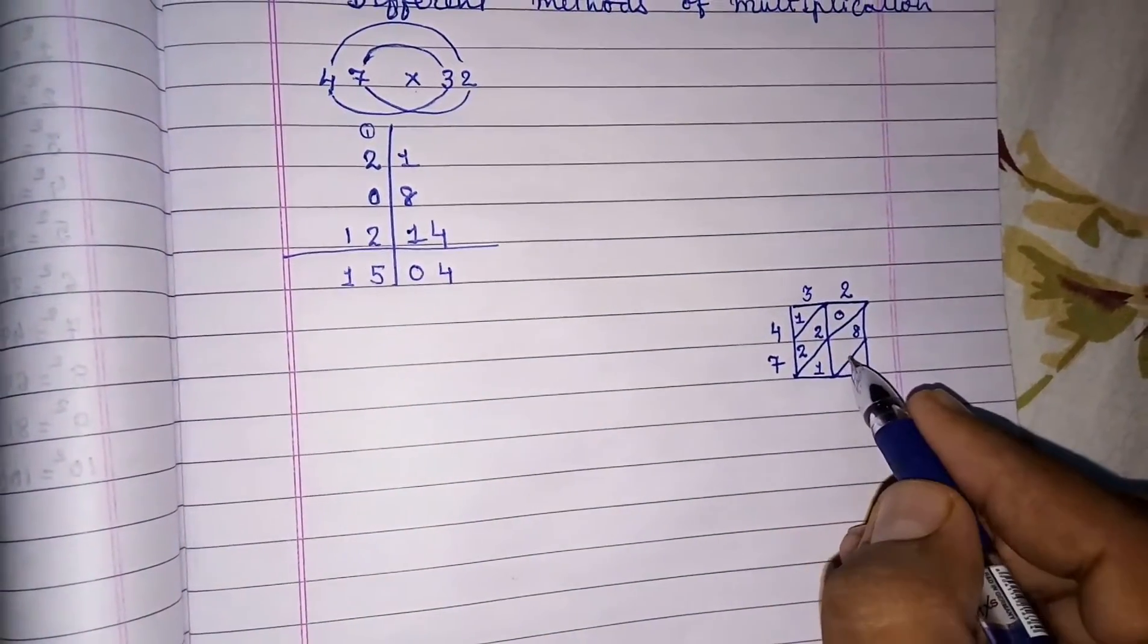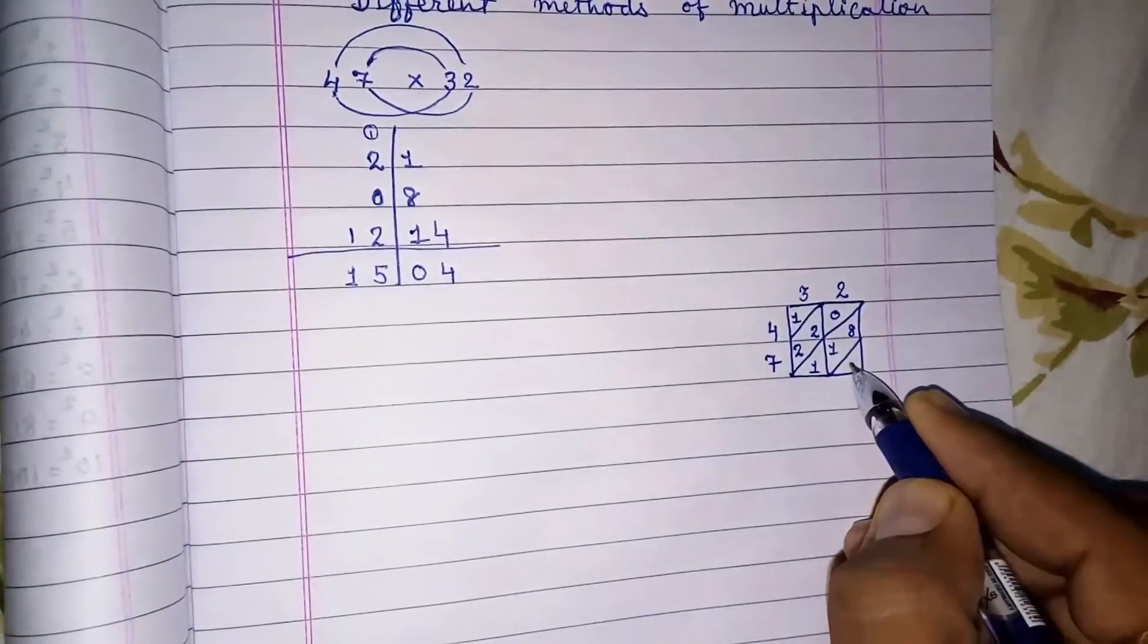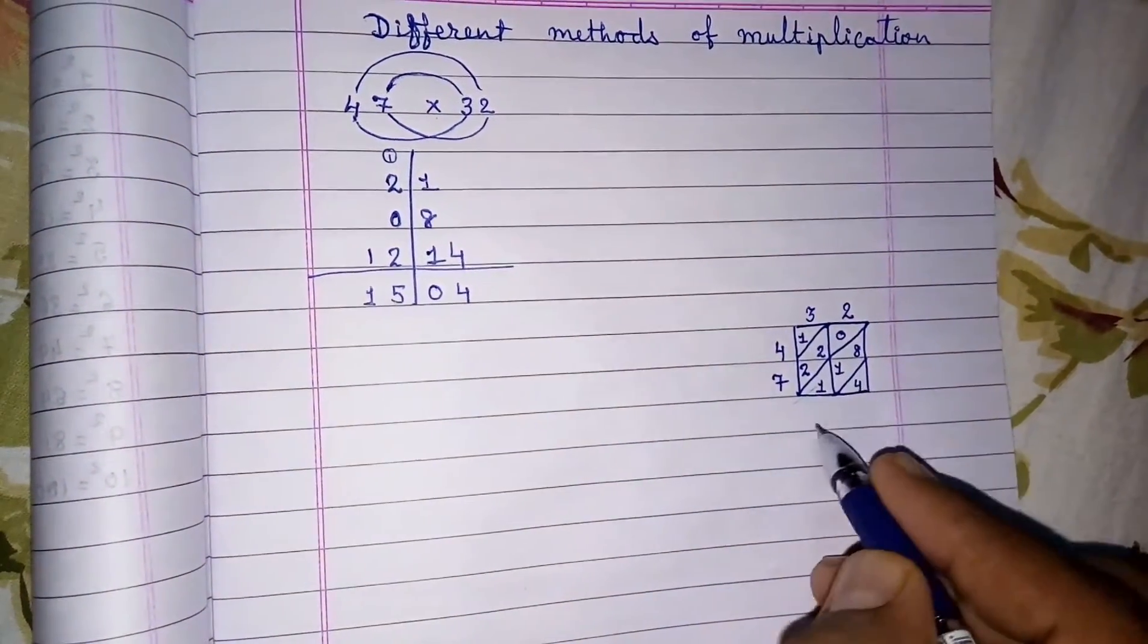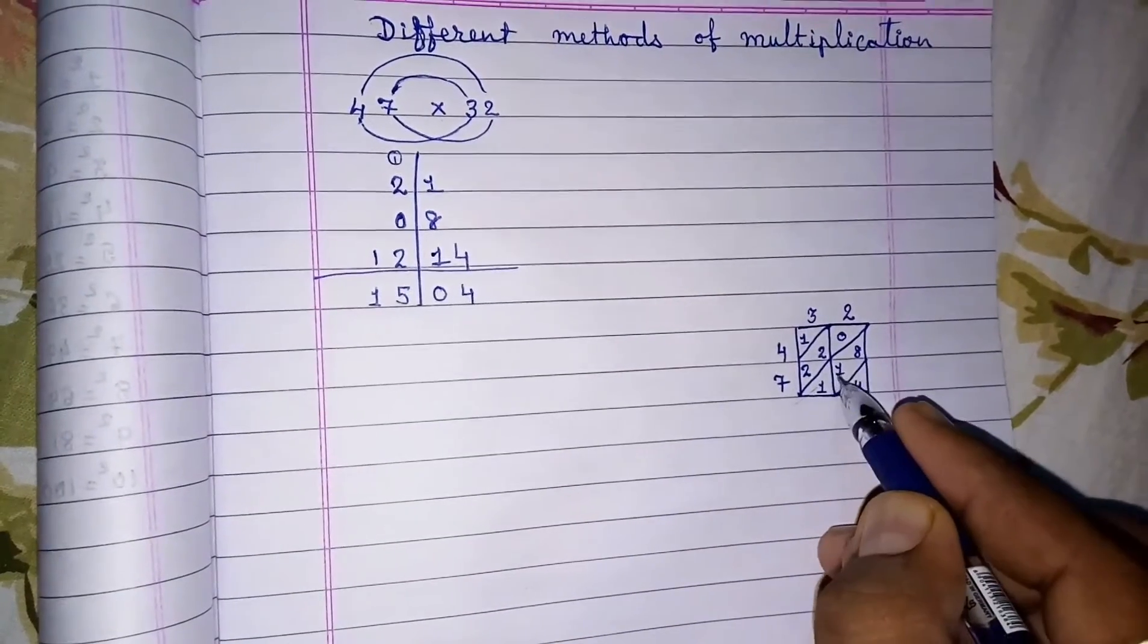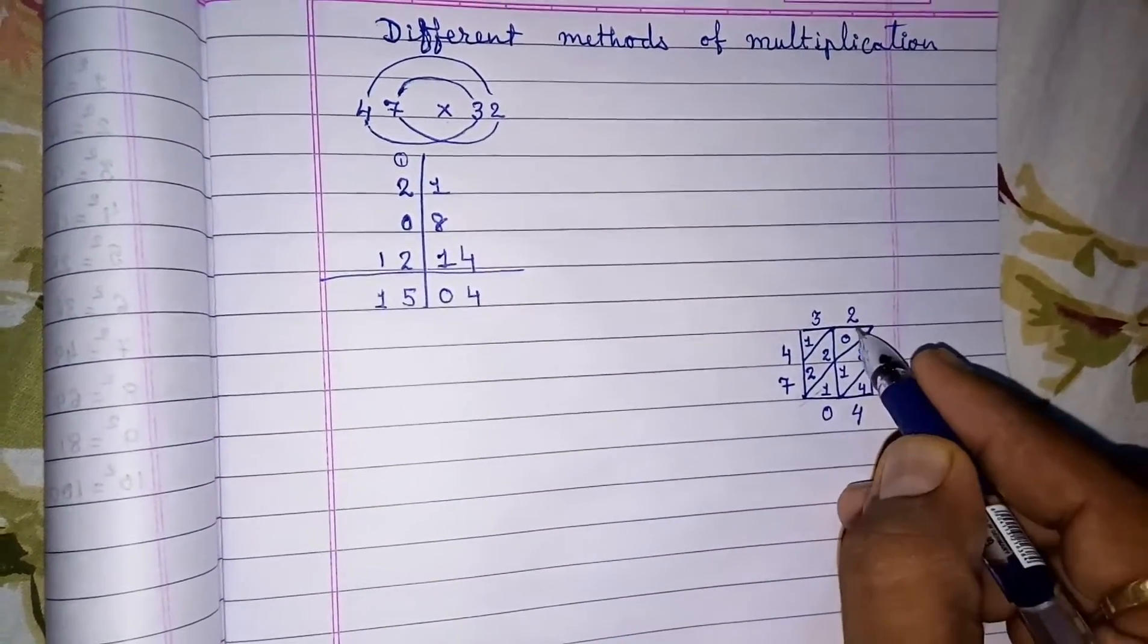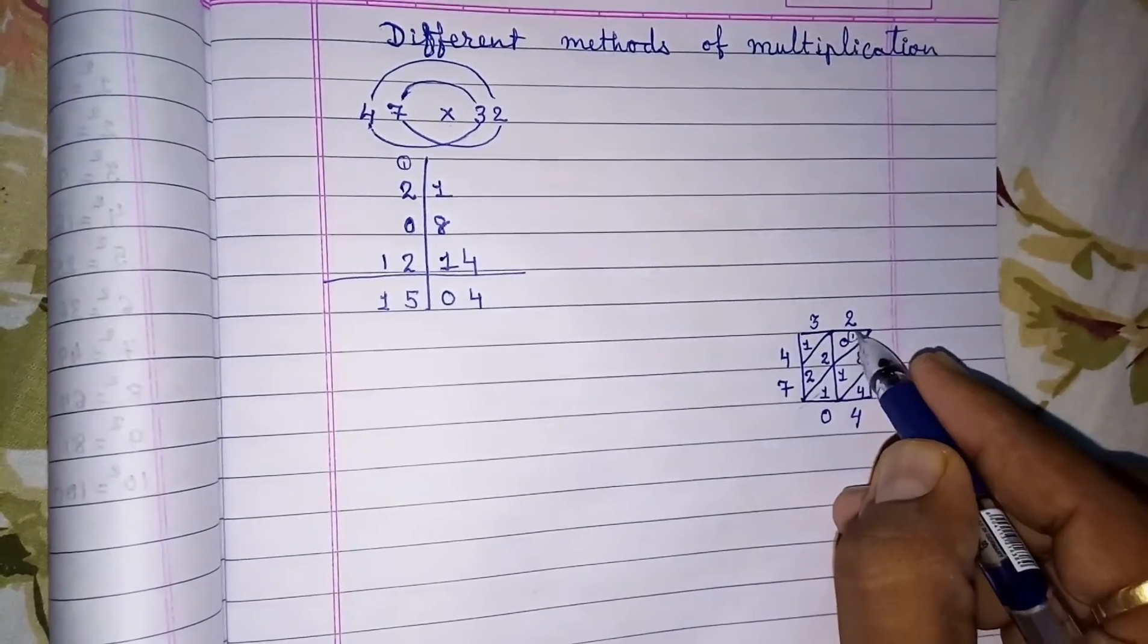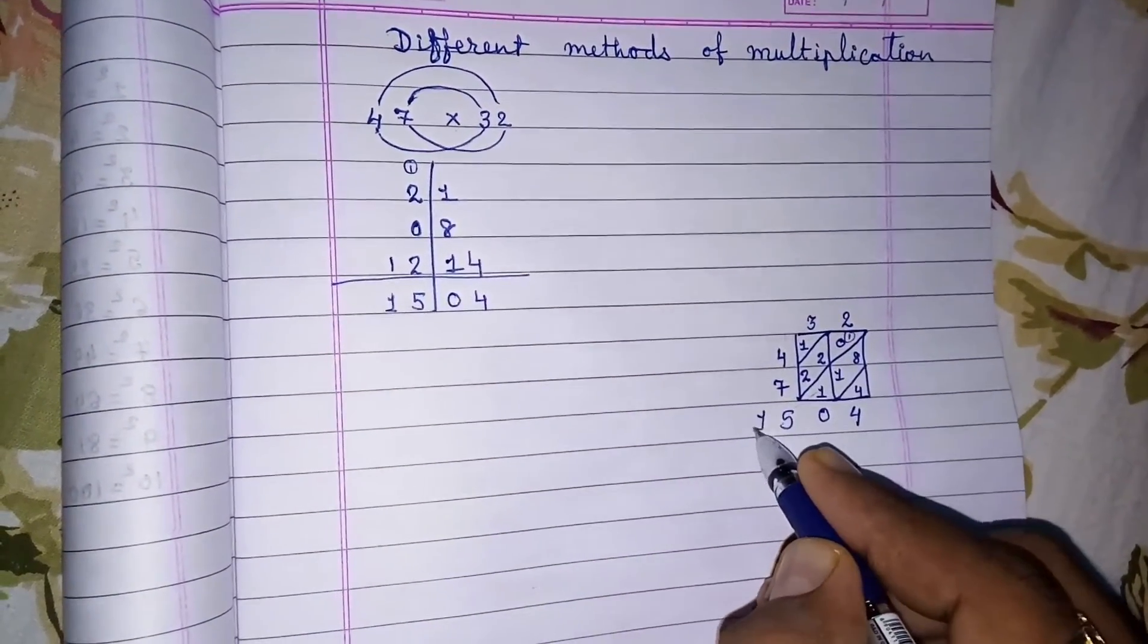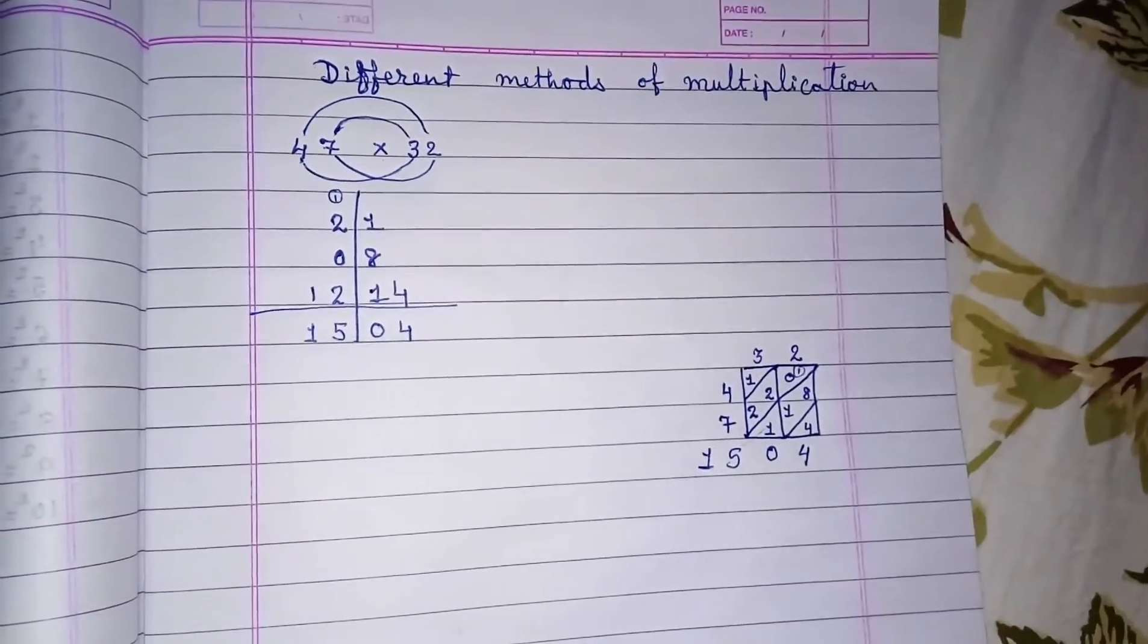Then 7 into 2, 14: 1, 4. Then we have to add in this manner: 4, 8, 1, 9, 10. 0 carry 1. 4 and 4, 9, 10. 0 carry 1 means 5, and then 1. Thank you.